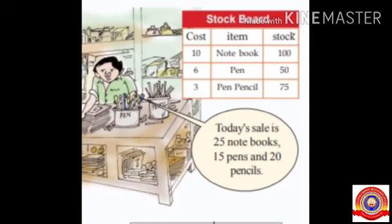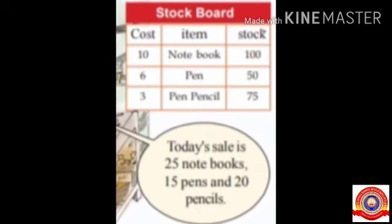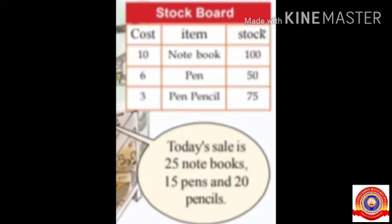Listen children, the first activity is about a store run by the students of a government LP school. Look at the stock board carefully and read the stock of each item: Notebook 100, Pen 50, and Pencil 75. Today's sale is 25 notebooks, 15 pens, and 20 pencils. What is the balance stock after today's sale?